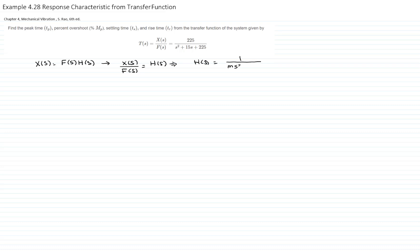The transfer function can be expressed in terms of the characteristics of the system, which is ms squared plus cs plus k. Or it can also be written in terms of omega n and zeta. That would be 1 over m and 1 over s squared plus 2 zeta omega n s plus omega n squared.